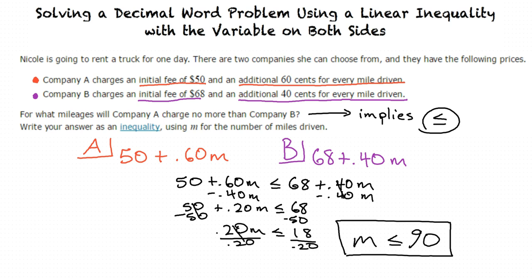So to summarize: figure out expressions for each part of the problem, then combine them into an inequality, and then solve for the variable. Correct! Good job!